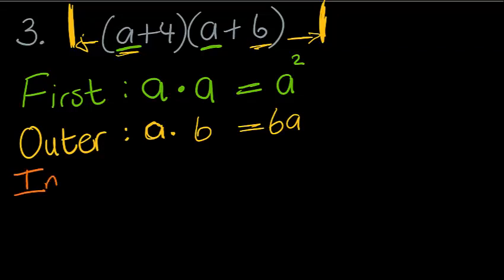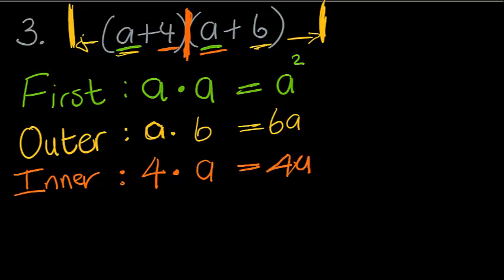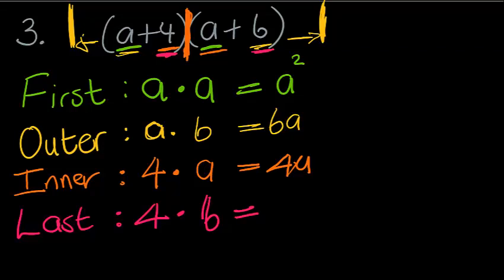The I in FOIL stands for Inner — on the inside. The term closest to the inner section in the first bracket is the number 4, and the inner term on the second bracket is a. So 4 times a gives me 4a. And L in FOIL stands for Last. The last term in the first bracket is 4, and the last term in the second bracket is 6. So 4 times 6 is 24.